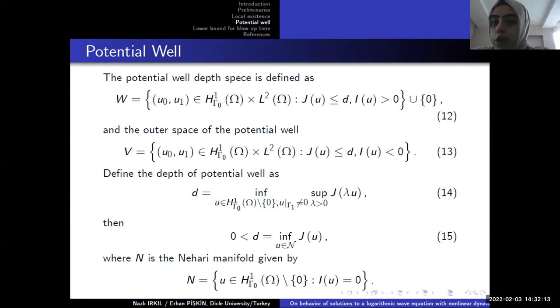The potential well space is important. Firstly, we can say the potential well depth is defined as in equation 12. It can be used for global existence. We can say if our solutions are in the set W, we can say we have a global existence.